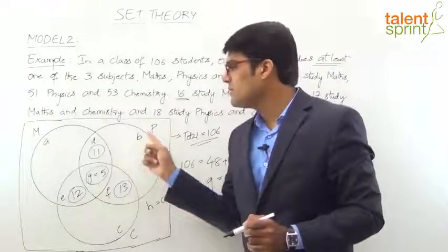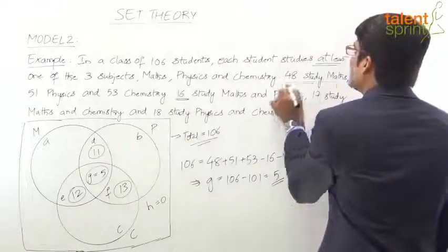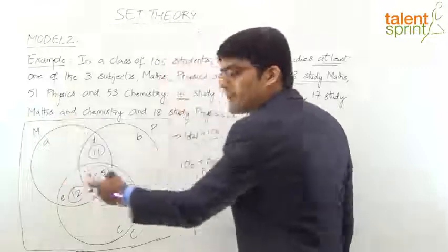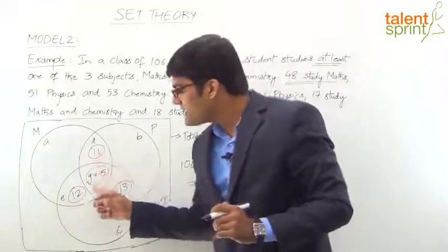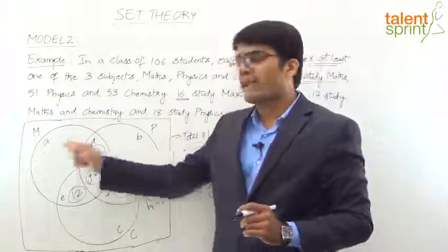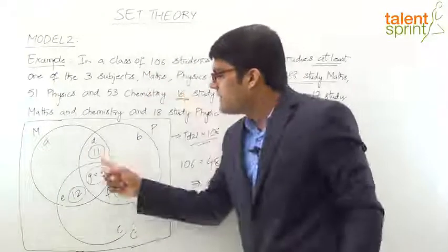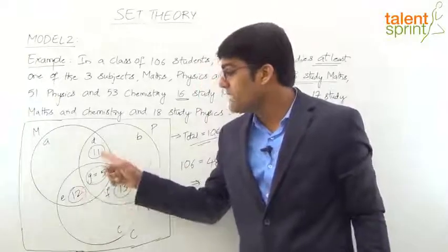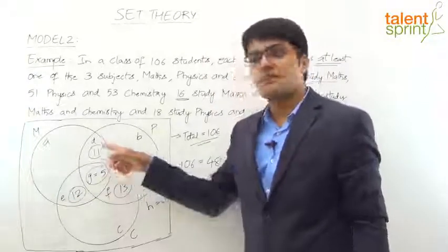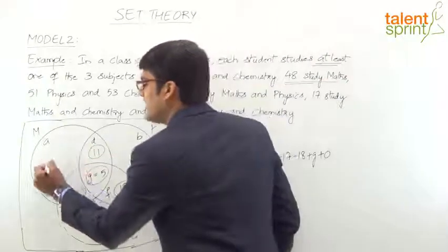Now let's find the values of small a, small b, and small c. For Maths (total 48): we have already filled 3 regions — D = 11, G = 5, E = 12. Their total is 11 + 12 + 5 = 28. So the remaining (only Maths) region a = 48 − 28 = 20.